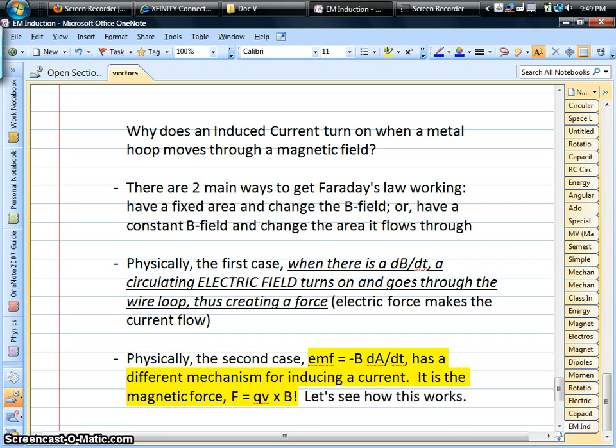So in this case, one of the questions you always want to ask is physically how and why does all this induction happen. How can you get a current to flow simply by moving a wire hoop or metal hoop through a magnetic field?